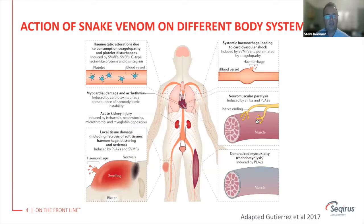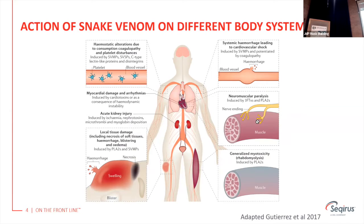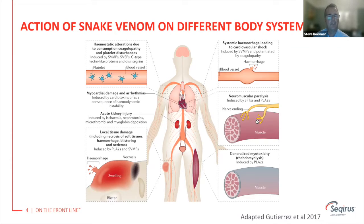Venoms are very complex mixtures of toxins. I have several slides illustrating the action of snake venom on different body systems — venoms can attack through their neurotoxins, myotoxins, cardiovascular toxins, and coagulation points. Therefore, an anti-venom has to be able to deal with all these different components, and it's not a simple task to ensure that potency testing covers all these different areas.